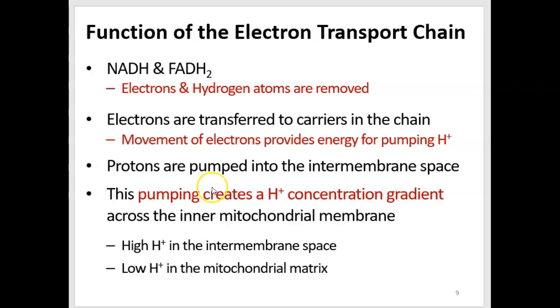So the function of the electron transport chain is to take the electrons away from NADH and the hydrogen atoms. The electrons are going to move through the transmembrane proteins, sometimes called carriers or coenzymes. And that provides the energy for pumping hydrogen.